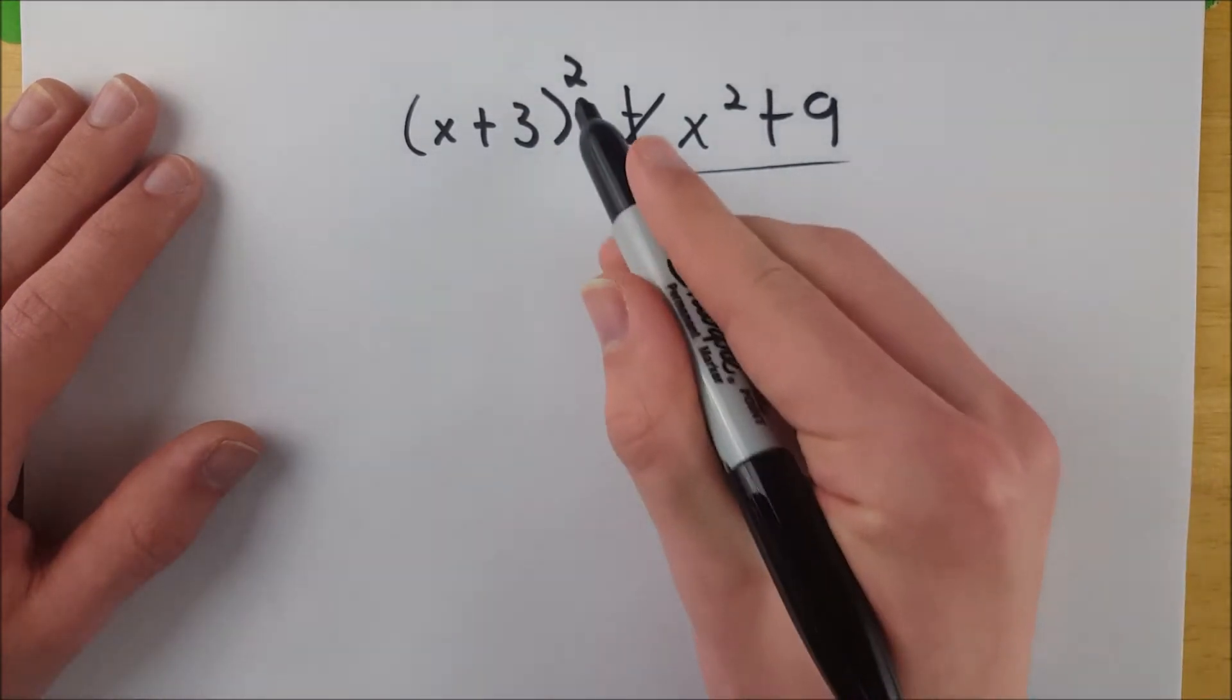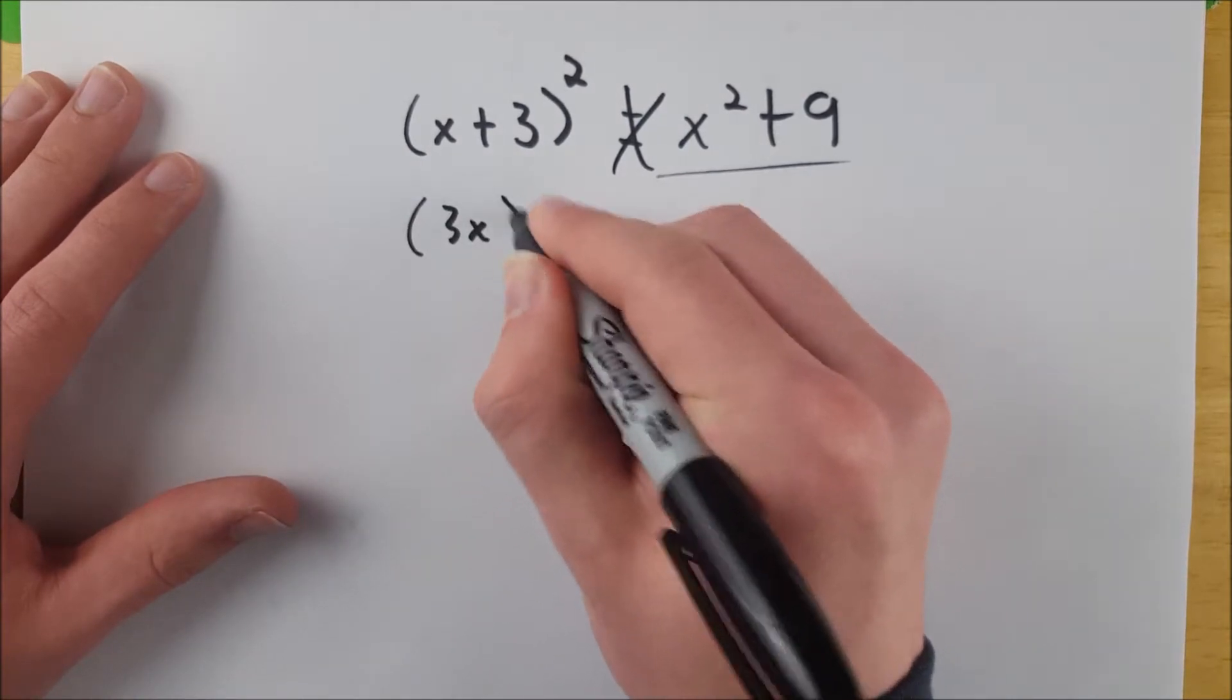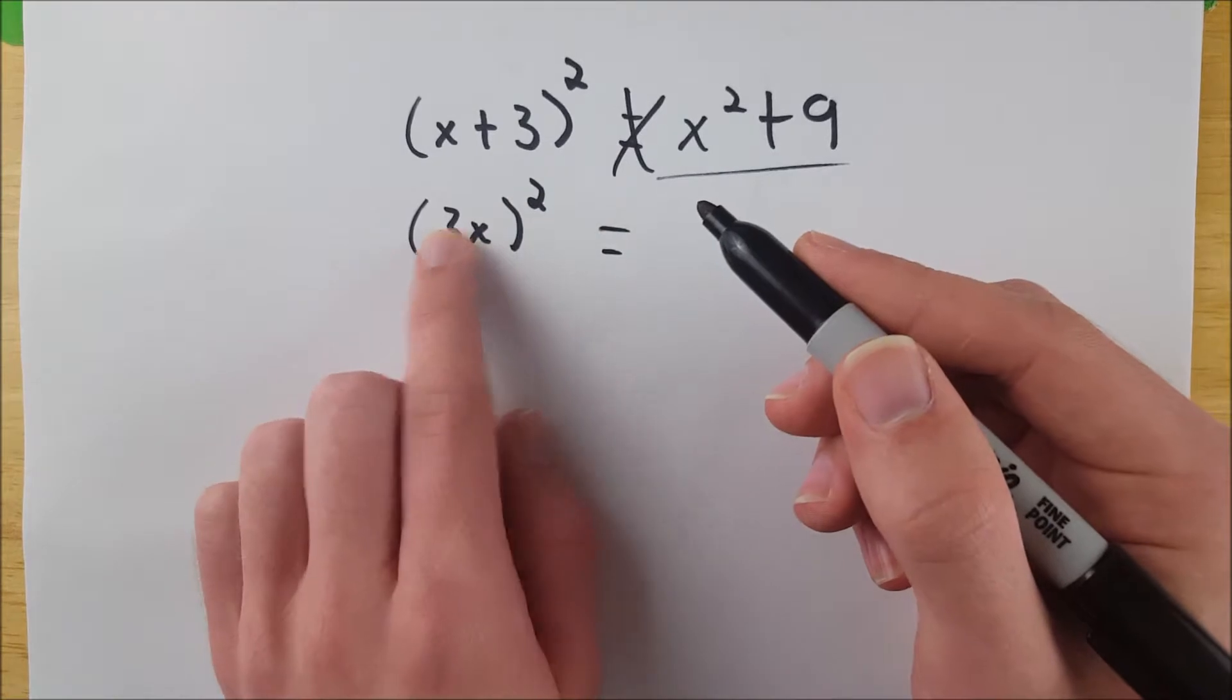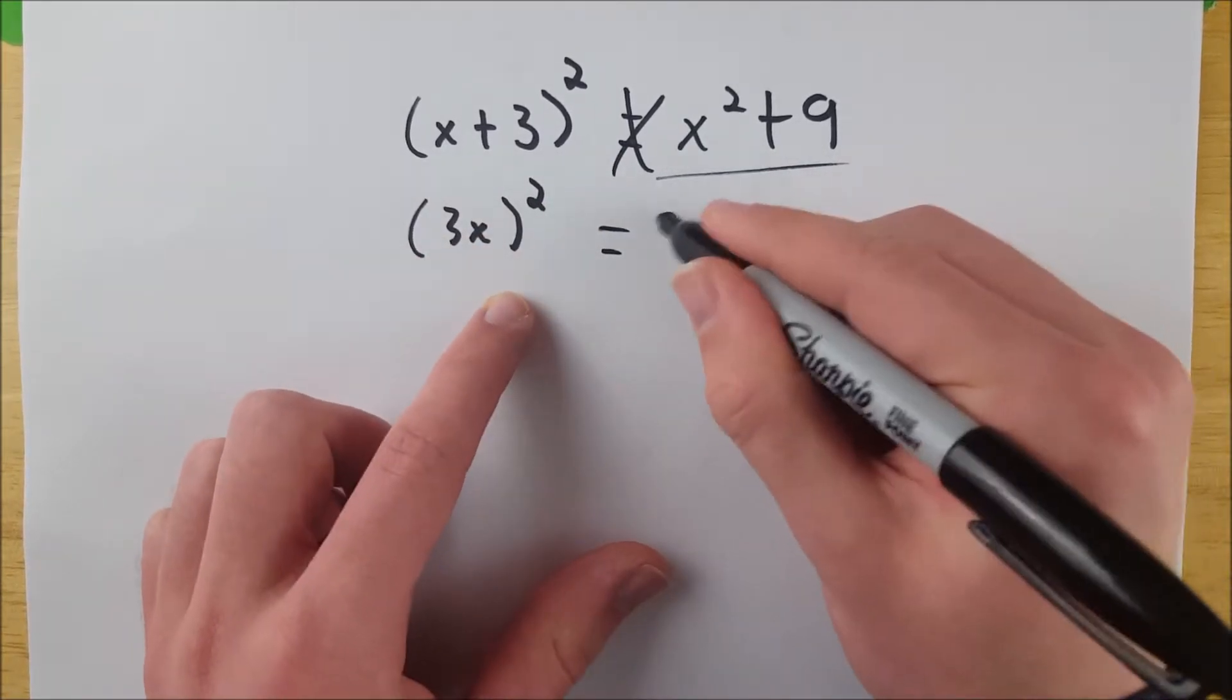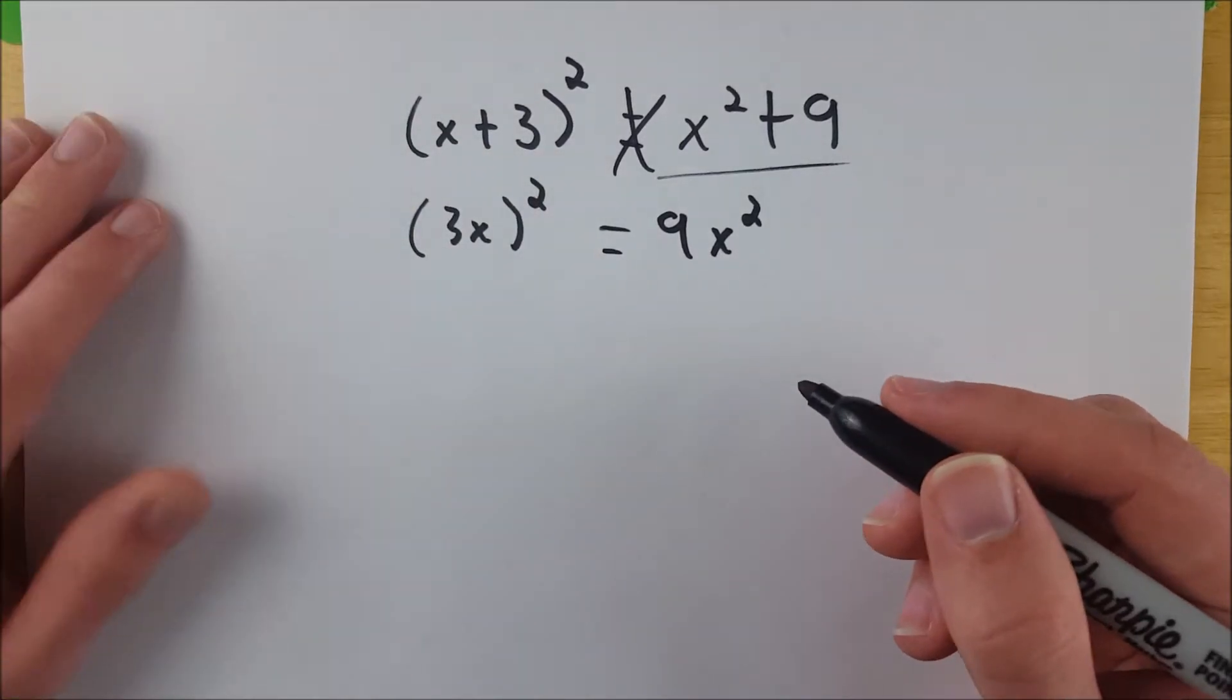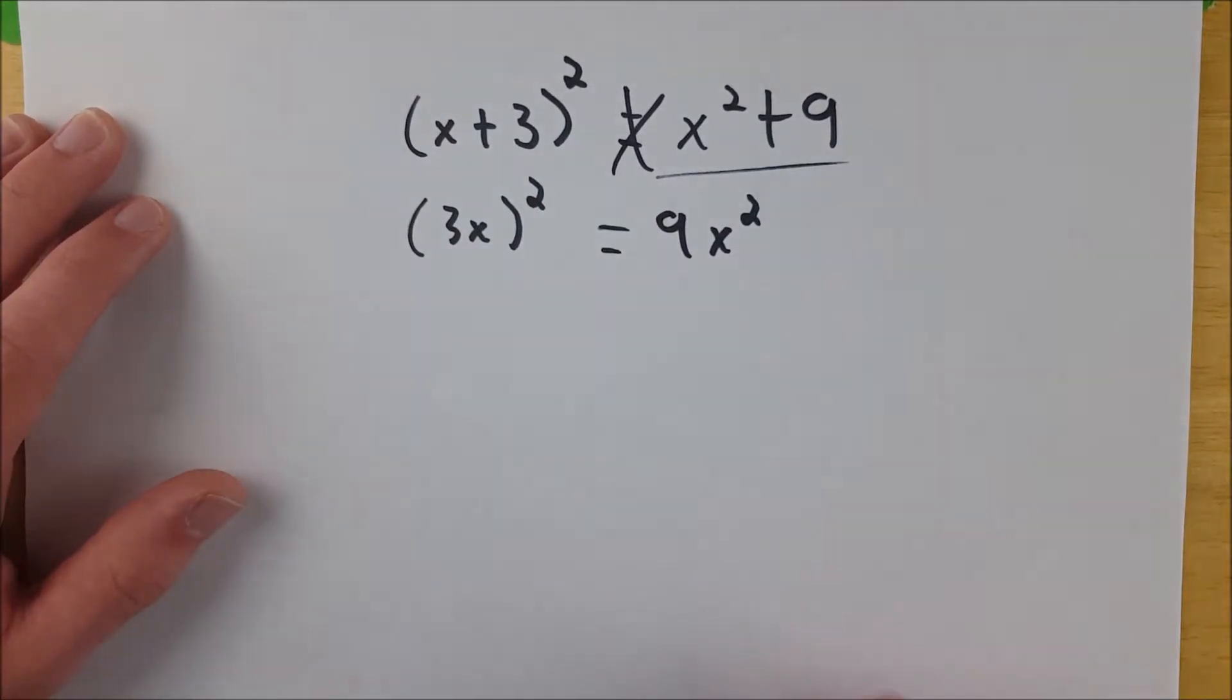That's bad. That is not how you FOIL this expression. Say you had something like (3x)², then that is sort of how you would do it, right? You distribute your exponent throughout and you'd get 9x². But here, where you've got addition in the parentheses, that's sort of an indication that you've got to use our old friend, the distributive property, which in this case takes the form of what is often called FOILing.